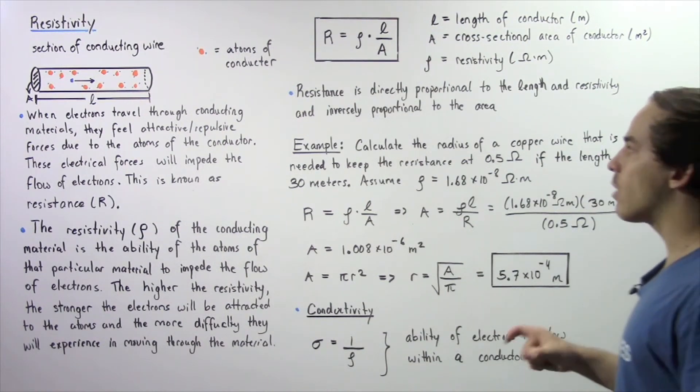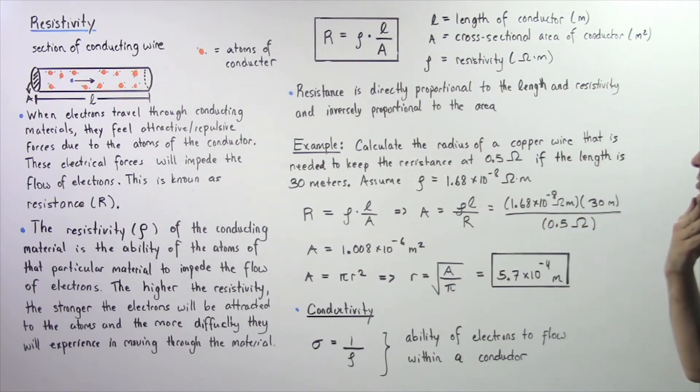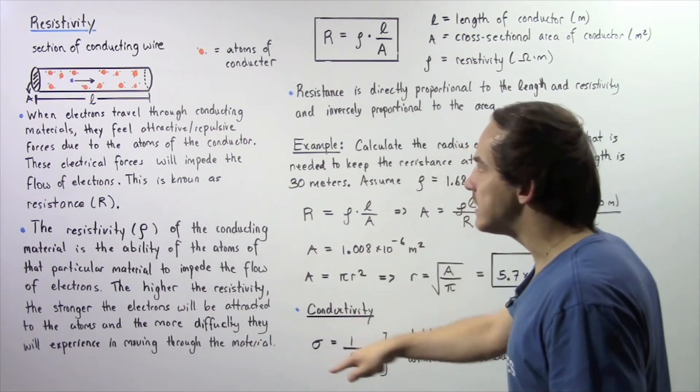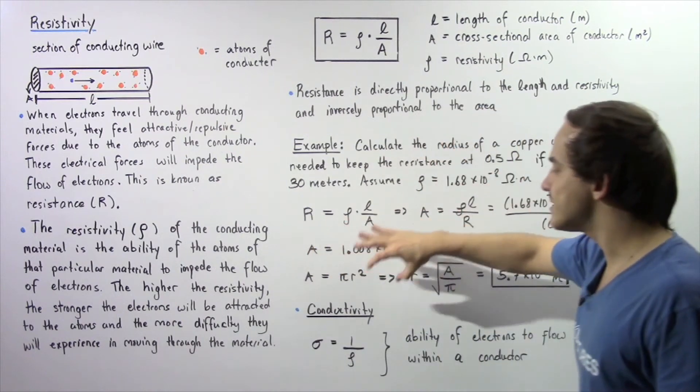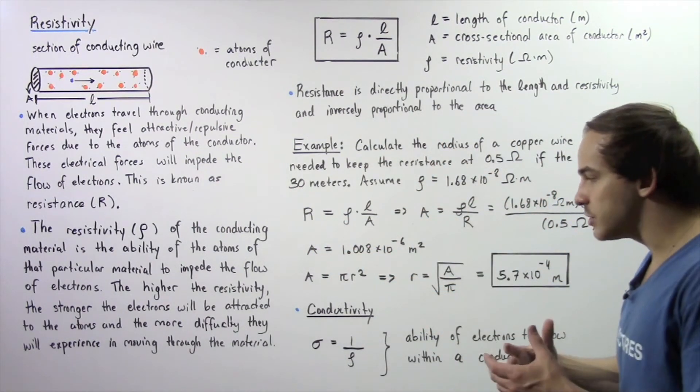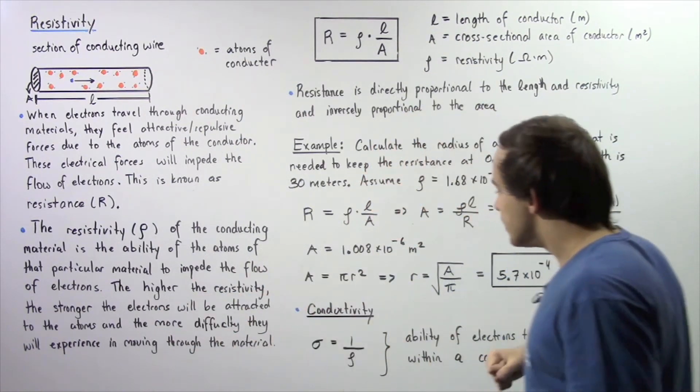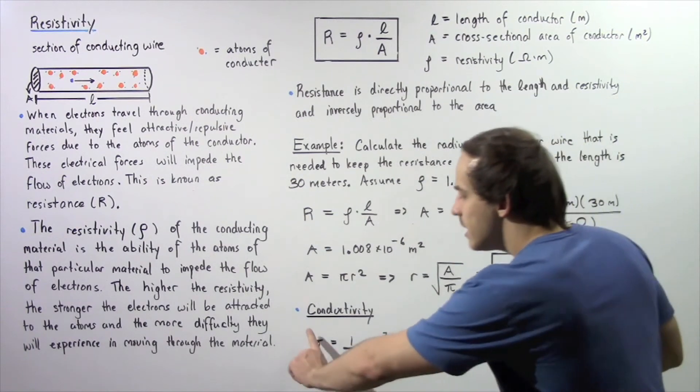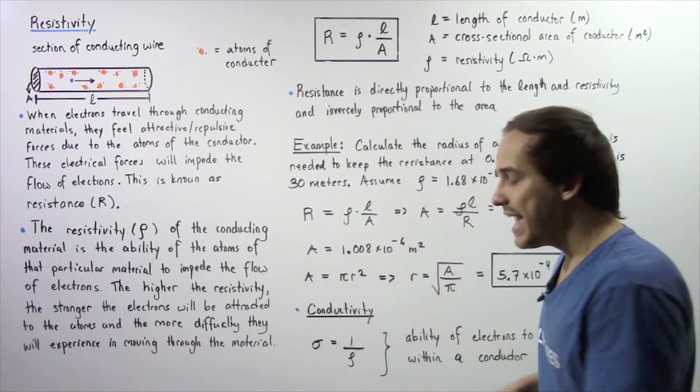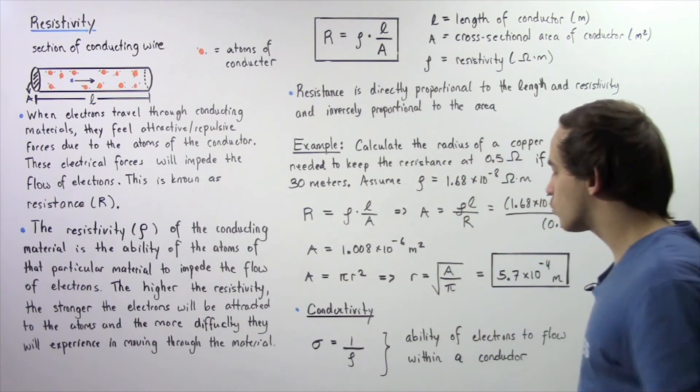Before we end this lecture, let's discuss one other concept. This concept is essentially the opposite of resistivity, known as conductivity. It's the ability of the atoms to flow through our wire freely. The conductivity of a material is given by the Greek symbol sigma (σ), and σ equals 1 divided by our resistivity ρ.